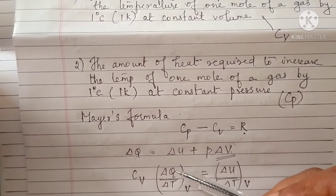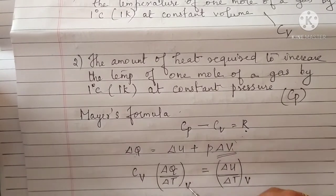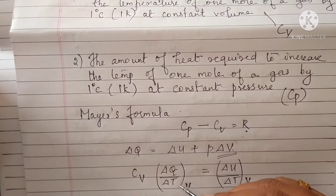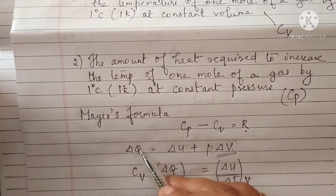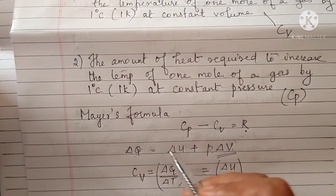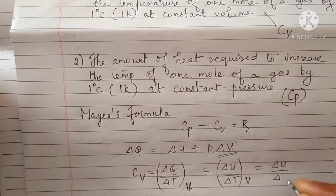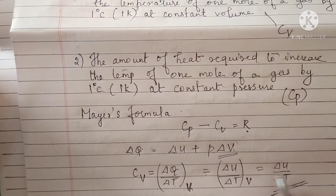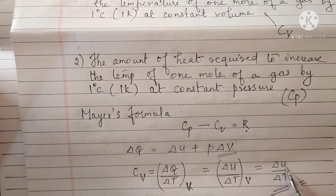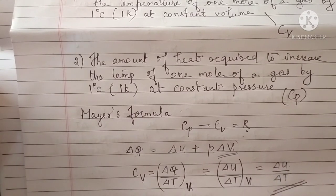This is Cv — the amount of heat required to increase the temperature of 1 mole of a gas by 1 Kelvin at constant volume. Since volume is constant, delta V tends to zero, so Cv equals delta U by delta T. We can drop the subscript V because the internal energy of an ideal gas depends only on temperature, not on volume. So Cv equals delta U by delta T.